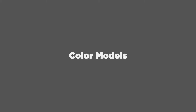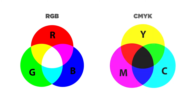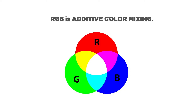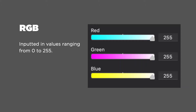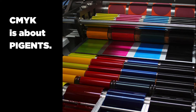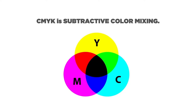There are two major color models any designer should be aware of: RGB and CMYK. RGB is about light. RGB is additive color mixing, meaning that as the colors of red, green, and blue mix together they move towards white. Just like the colors of the rainbow, the brightness levels of red, green, and blue can be adjusted in values of 0 to 255.